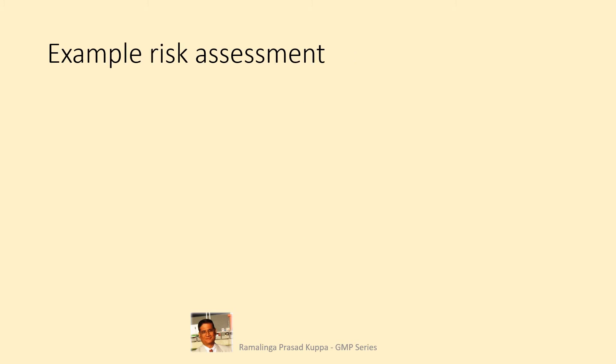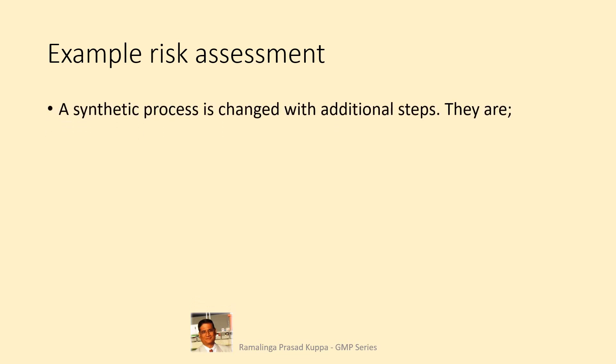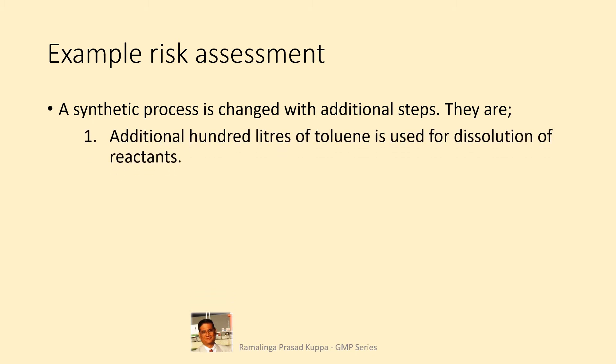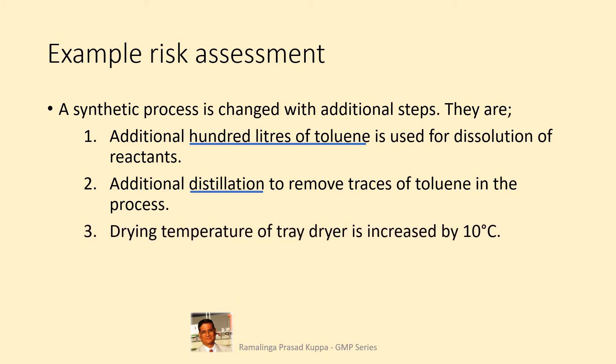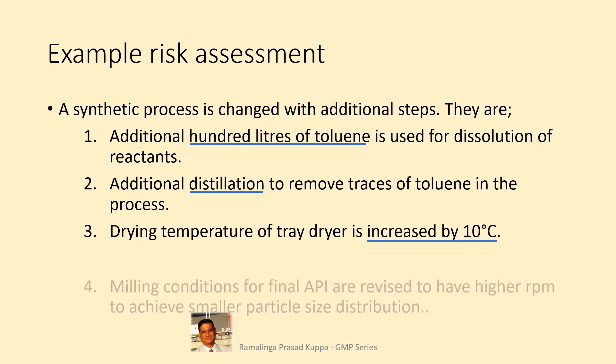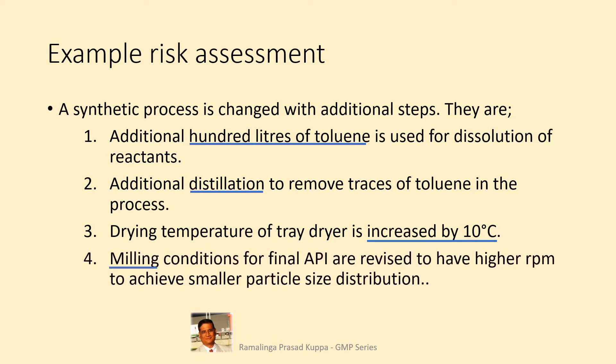Let us see a typical example of risk assessment. A synthetic process is changed with additional steps. They are: one — an additional 100 liters of toluene is used for dissolution of reactants; two — additional distillation to remove traces of toluene in the process; three — drain temperature of the tray dryer is increased by 10 degrees Celsius; four — milling conditions for the final API are revised to have higher RPM to achieve smaller particle size distribution. For an established and approved process, the above changes are proposed. Let us see how each step is evaluated for risk.